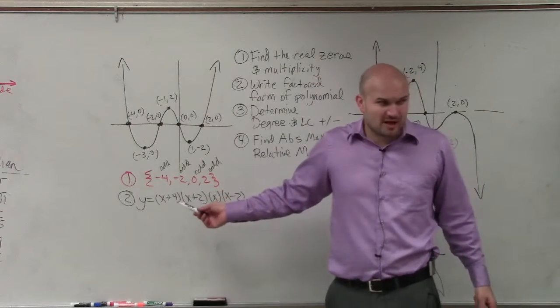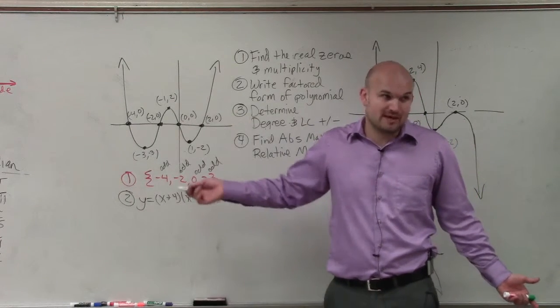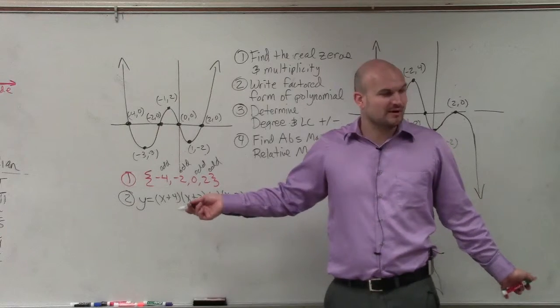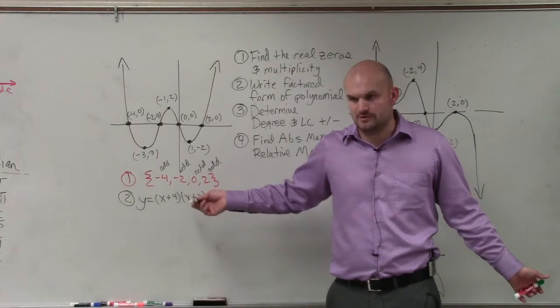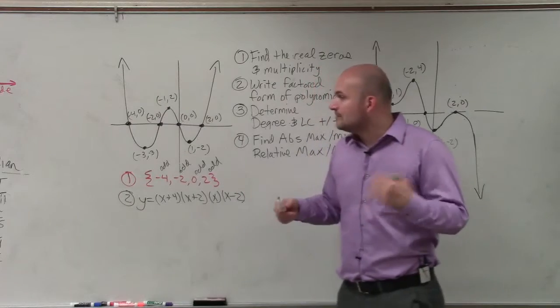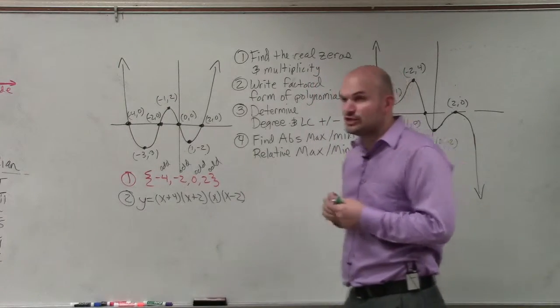Then, if I asked you to write the polynomial, could you? Could you multiply that out? It'd be a little bit more math work, right? That's why I didn't ask. But you could do that, correct? OK. Now, we all know the multiplicity is odd. The next thing I asked you to do was to determine the degree.